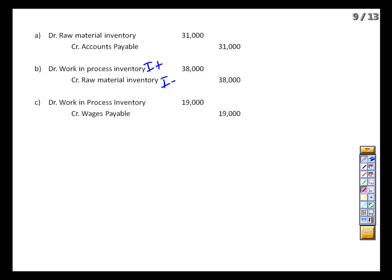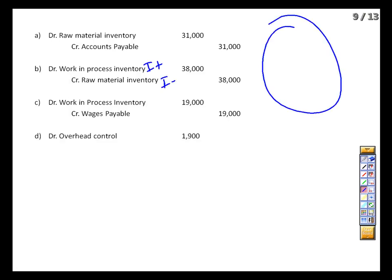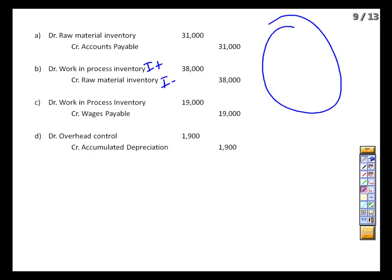Depreciation time — $1,900 of depreciation. The credit goes to accumulated depreciation. Again, we're not going to debit the expense for the same reason we didn't with wages payable. However, we're not going to debit work in process inventory either — here's where things get a bit funky. We're using a normal costing system, which means that while we track actuals for direct materials and direct labor, for all overhead costs we're going to put them in a temporary account called overhead control. This will eventually get into inventory and then cost of goods sold, but for the meanwhile we'll hold it there.